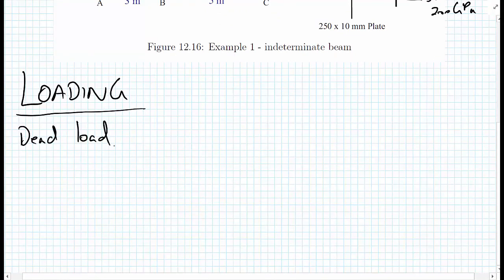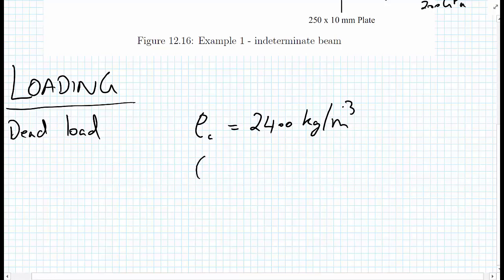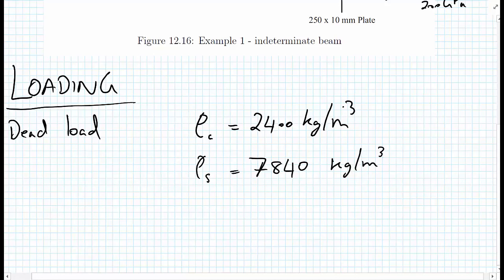The first thing we need to know is the mass densities of the constituents of this beam. The mass density of concrete is equal to 2400 kilograms per meter cubed. The mass density of steel is equal to 7,840 kilograms per meter cubed. We're going to use these to calculate our dead load.